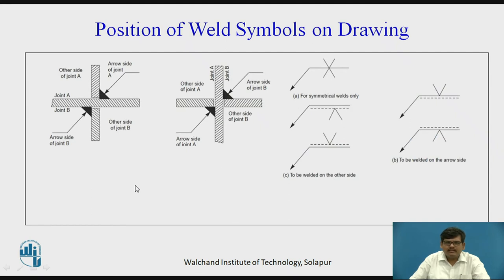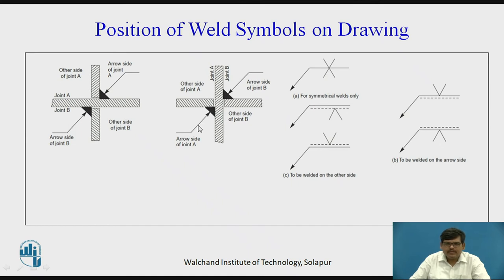Here we see another arrangement showing position of weld symbols. These are two plates to be welded. The arrow is pointing towards the welded side — this is the arrow side and this is the other side. When the arrow is pointing towards the welded side, it is called the arrow side of the welded plates, and the opposite is called the other side of the welded plates.